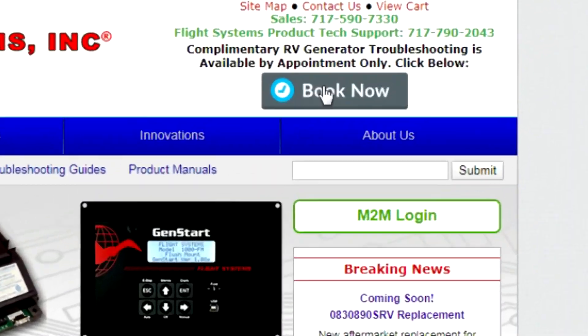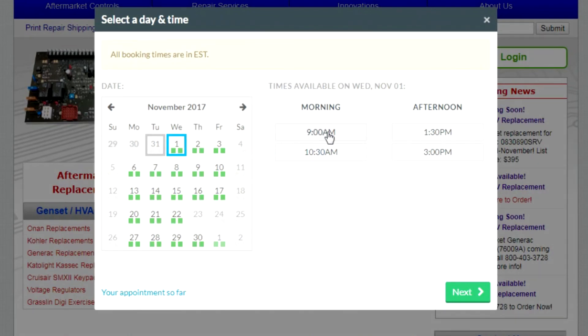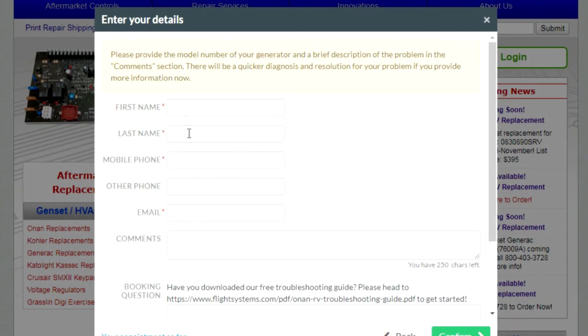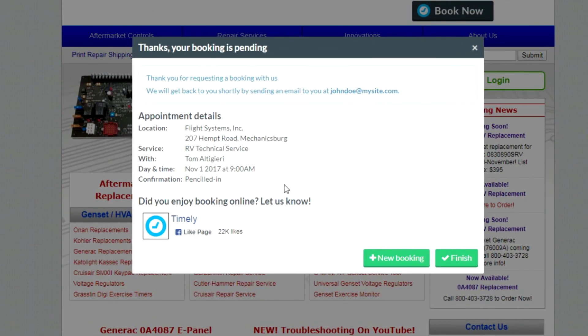It's easy to book RV tech support at FlightSystems.com. Just hit the book now button. Choose your date and time for the appointment. Hit next and enter a few simple details such as your name, your phone number, and your email address. It also helps to include a brief description of the problem and your generator's model number. Agree to the cancellation policy and hit the confirm button. Just review the info and hit finish. You're now one step closer to a working generator.